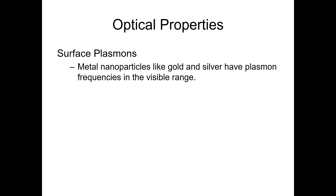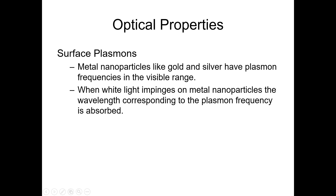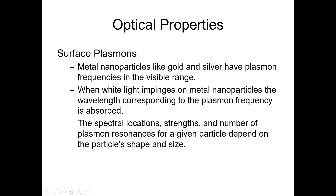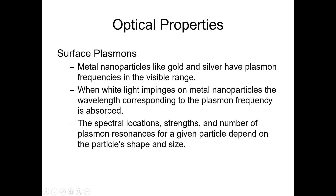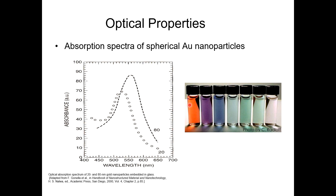Metal nanoparticles like gold and silver have plasmon frequencies in the visible range. When white light impinges on the metal nanoparticles, the wavelength corresponding to the plasmon frequency is absorbed. As a result, the spectral location, strength, and number of plasmon resonances for a given particle depends on the particle shape and size. Here you can see different colors for the same gold nanoparticles — this is the result of different absorbances with respect to wavelength.